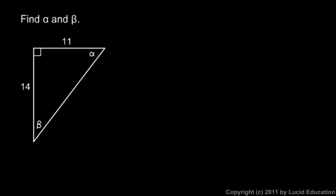Okay, this next one is pretty straightforward also. We're given a right triangle, right angle right there, and we're told to find alpha and beta, these two angles. Well, let's start with alpha.